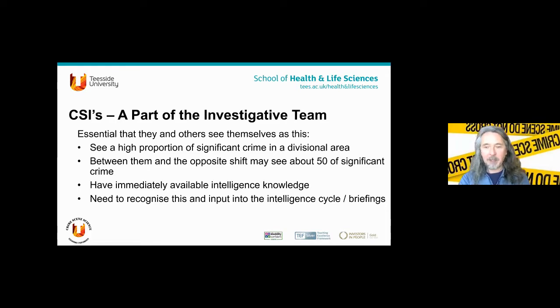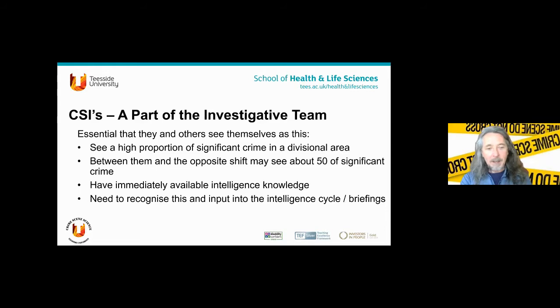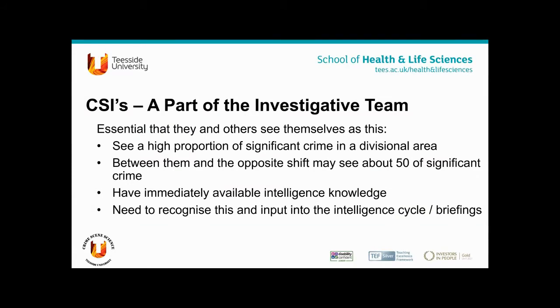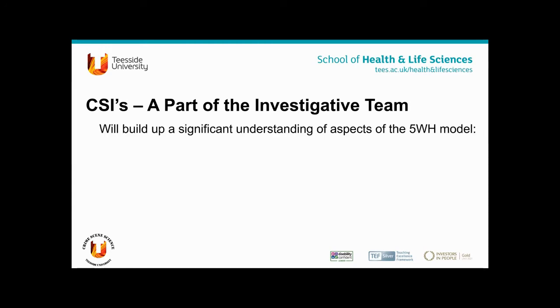In Durham, between myself and my colleague, we saw about 50% of the significant crime in the Durham Chester Street divisional area. A lot came our way, and we had that knowledge immediately accessible to us — not just knowledge of the scenes. We started to realize we had intelligence: we knew what was happening, where it was happening. It became important to be included by the wider uniform policing community, the police support staff, and to input our information into the intelligence cycle and briefings.